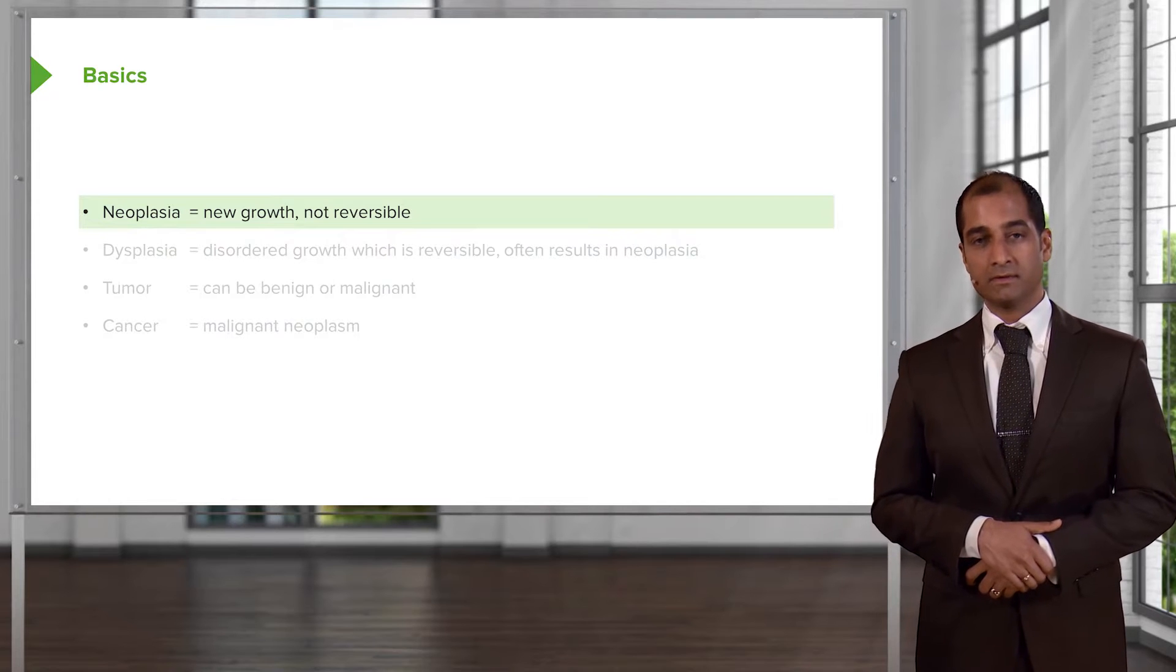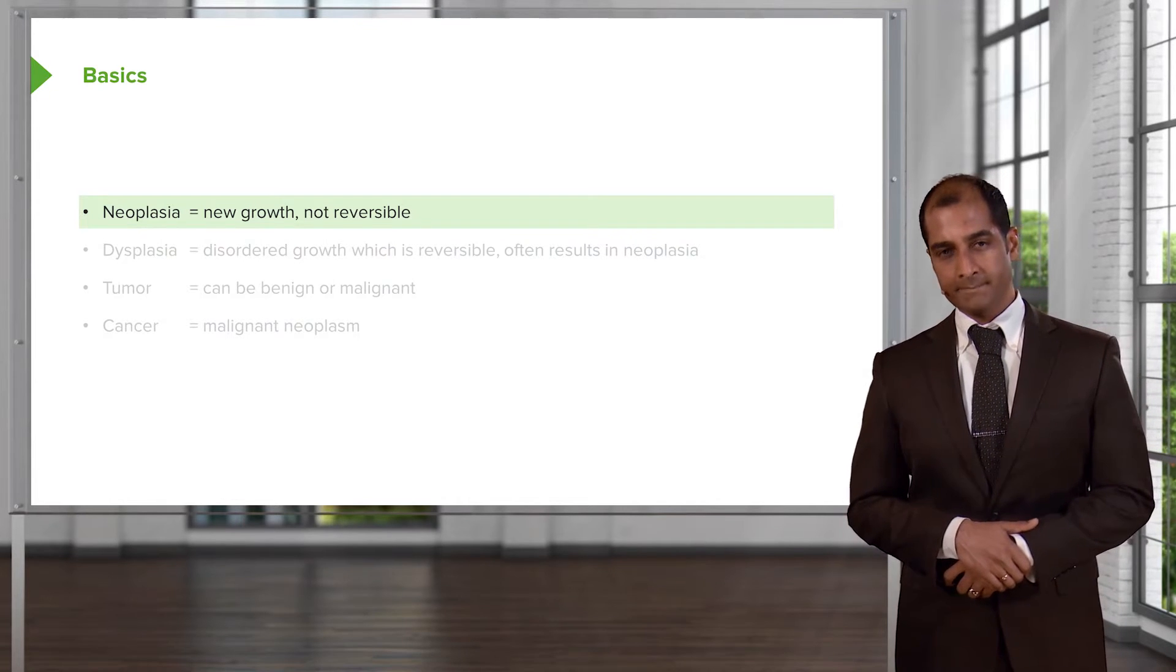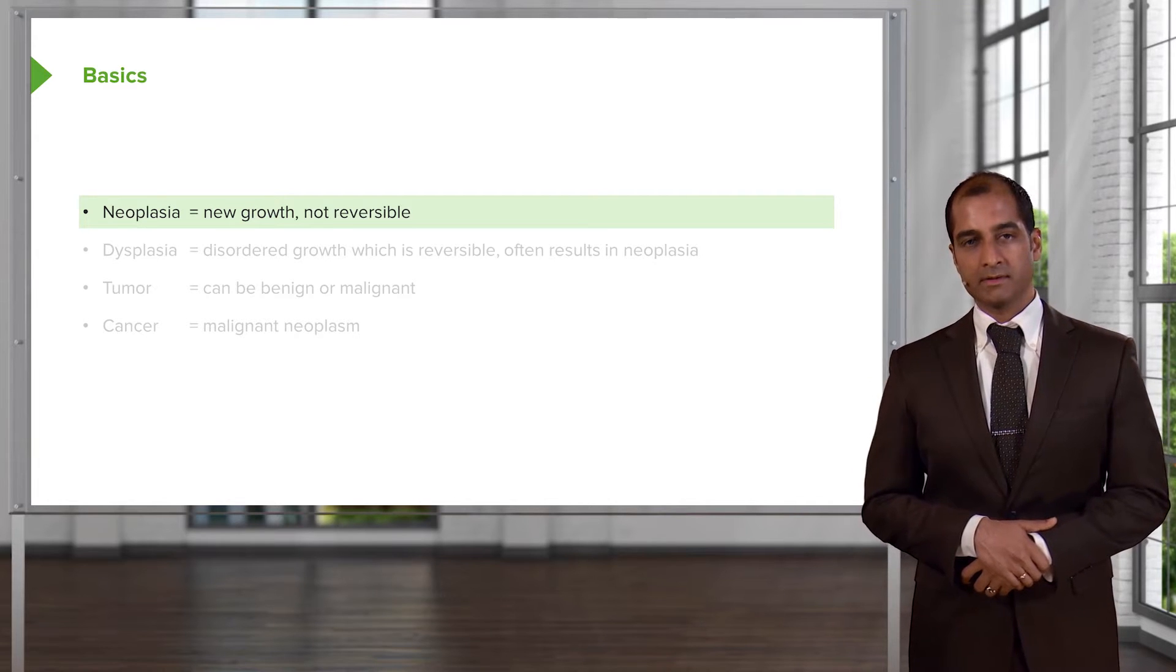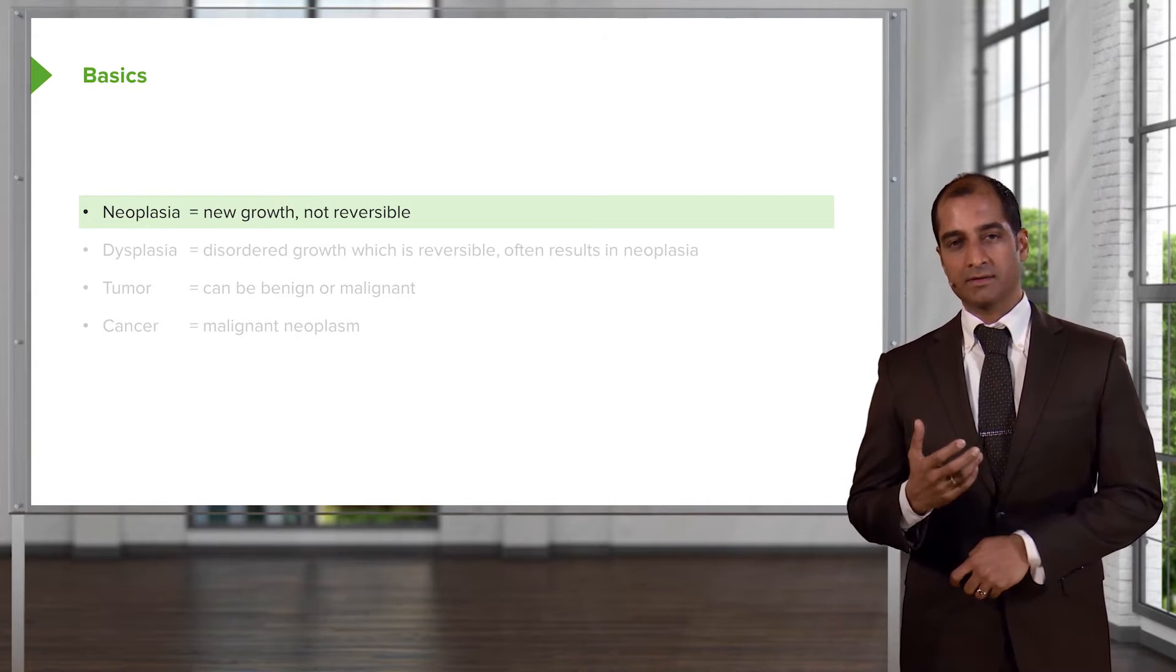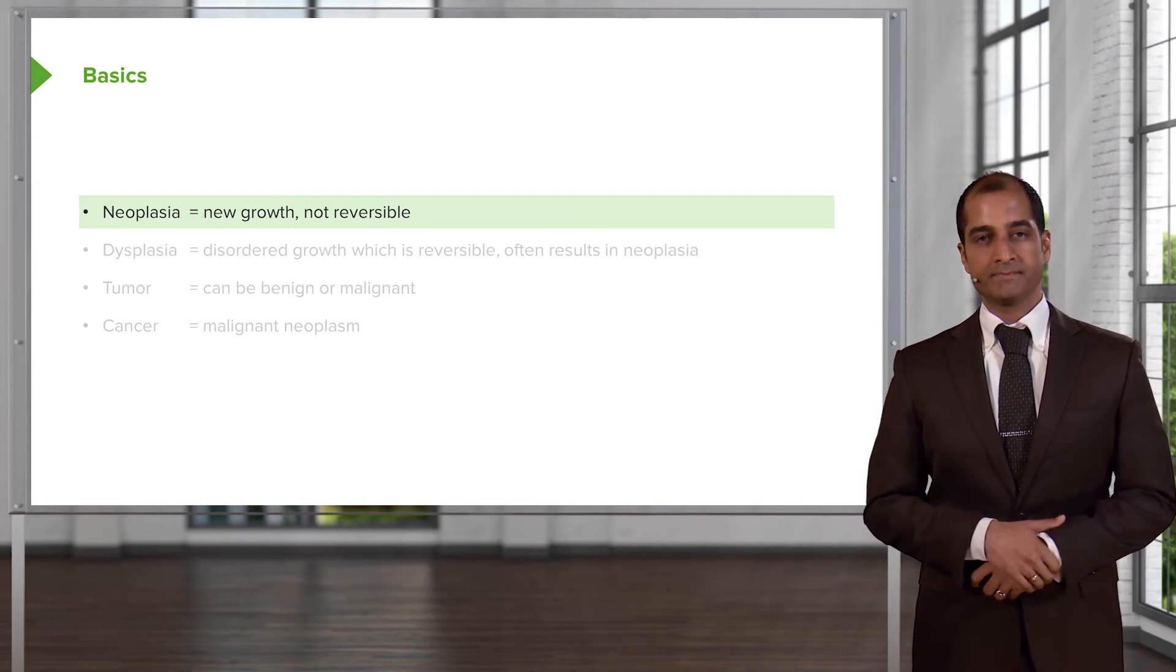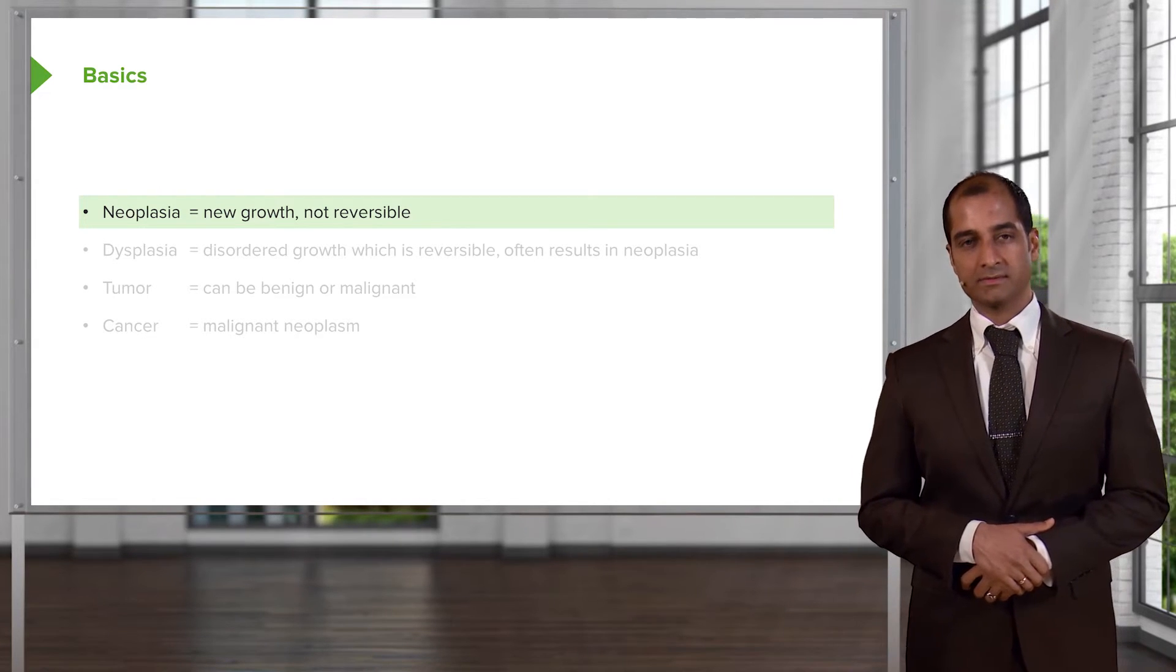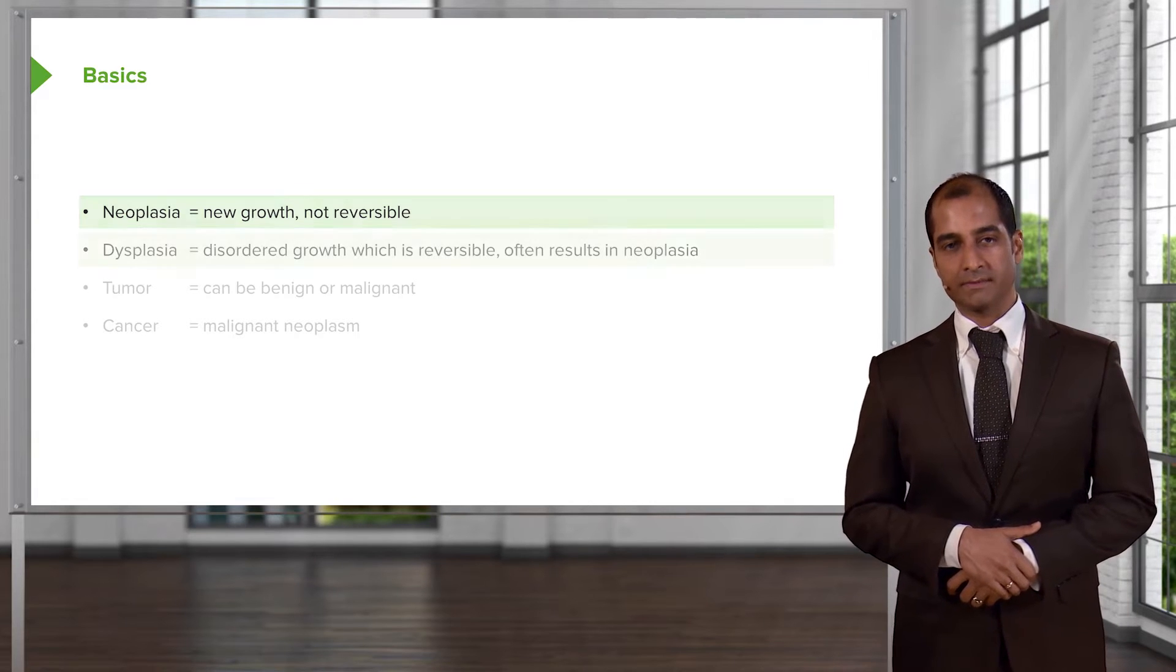Neoplasia, new growth, not reversible is key, even with benign. Remember, if a cell undergoes increased mitotic rate at some point in time within the cell cycle, meaning to say that you're in the M phase, very difficult to reverse that.